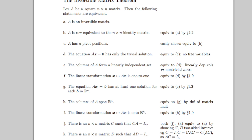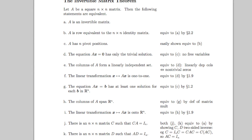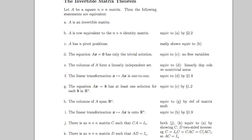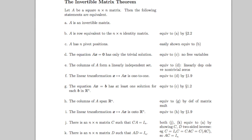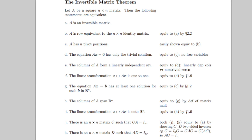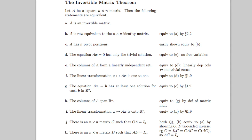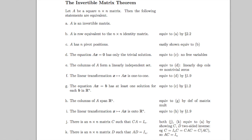There is an n×n matrix D such that AD equals I_n. A is row equivalent to the n×n identity matrix. A has n pivot positions. The equation AX equals zero has only the trivial solution. The columns of A form a linearly independent set. The linear transformation X to AX is one-to-one.